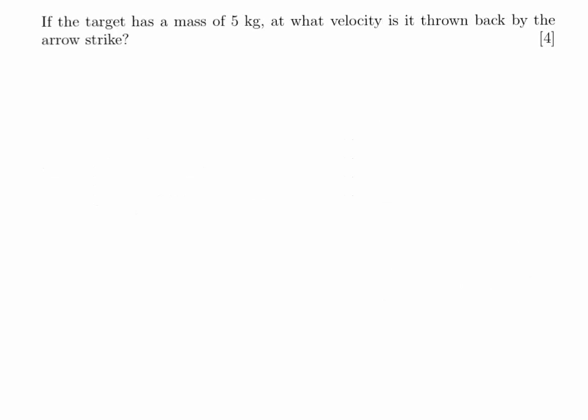In this question, we need to find the velocity that the target moves backwards, and this is a conservation of momentum question. So M1 is the mass before, V1 is the velocity before, M2 is the mass after, and V2 is the velocity after. And our mass before is, of course, the mass of the arrow, so it's 0.02. Our velocity is the square root of 2,600, which we had in our last question.